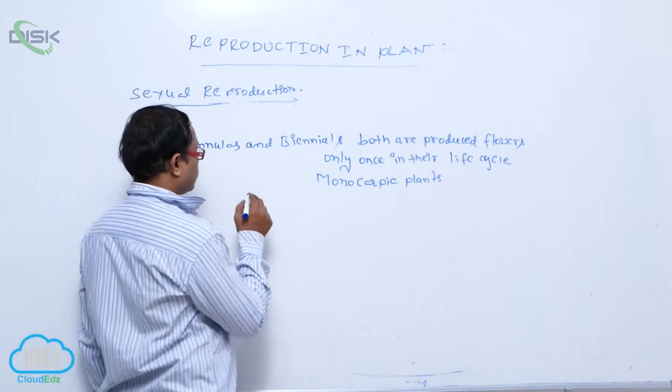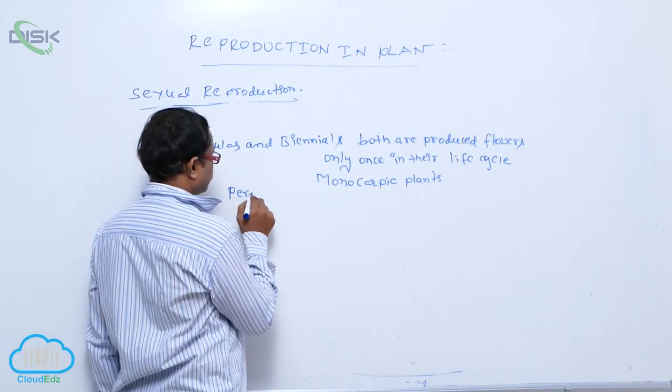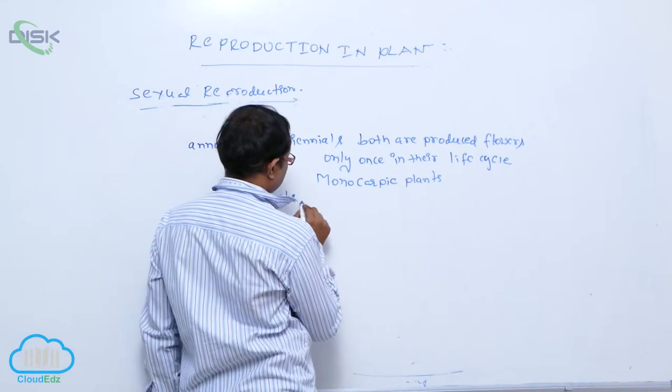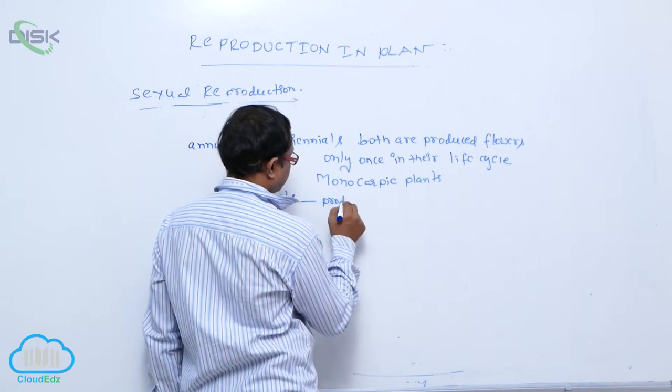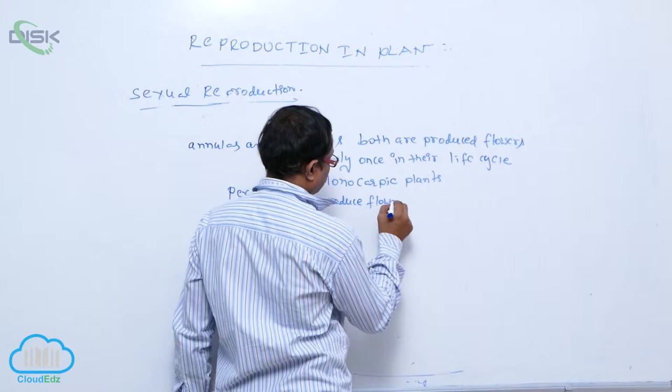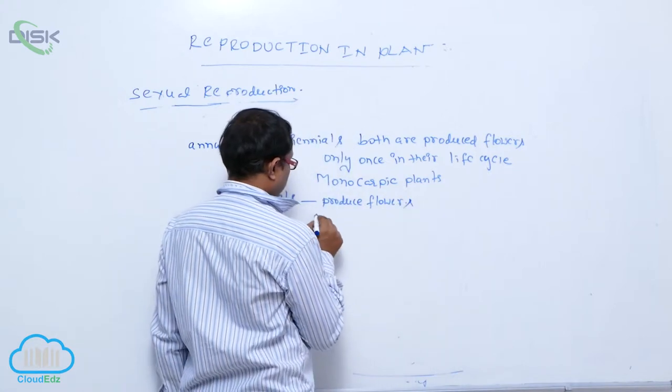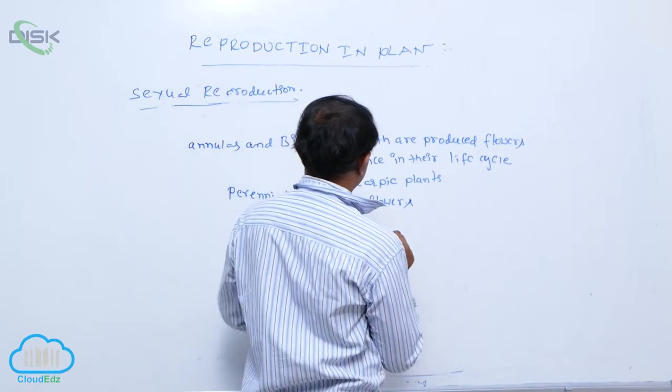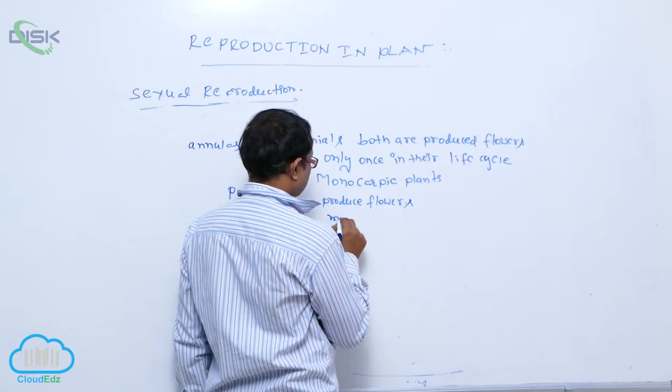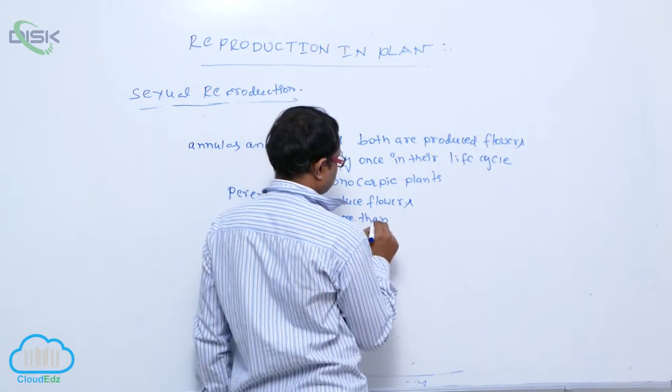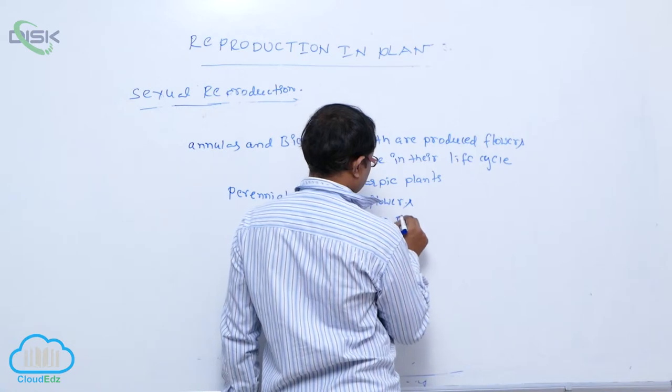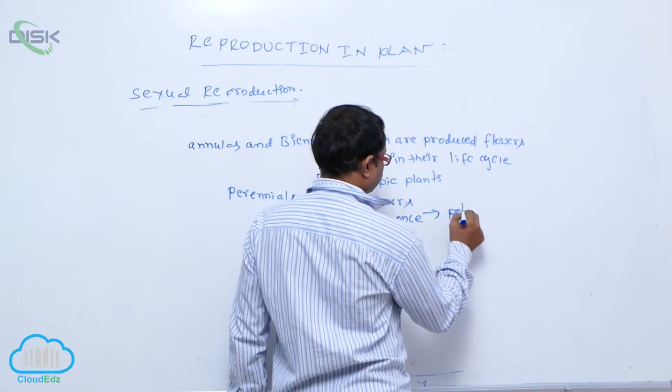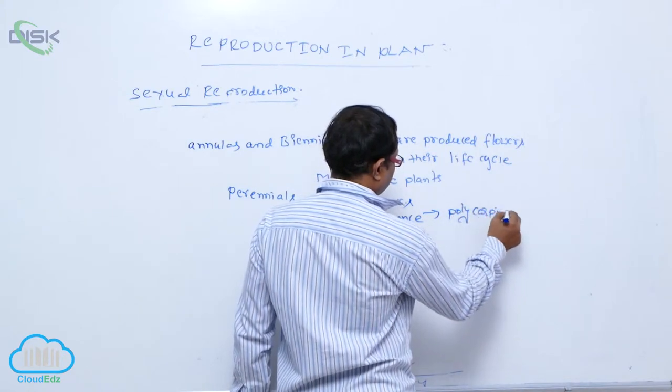Most perennials produce flowers continuously, more than once. They are known as polycarpic condition.